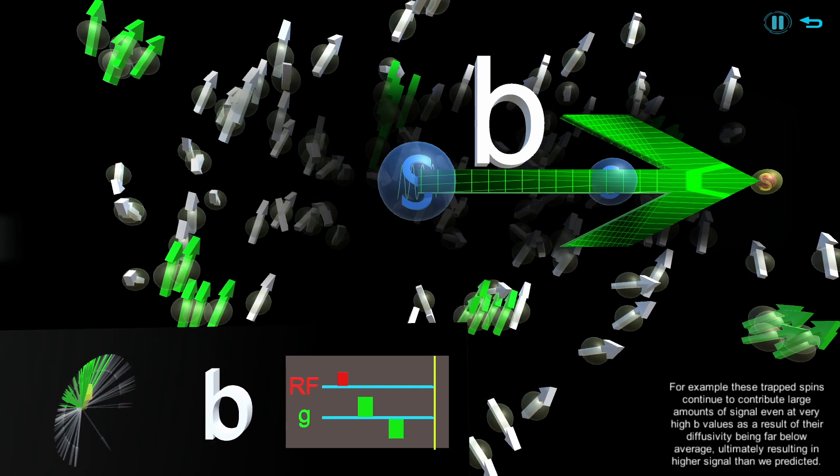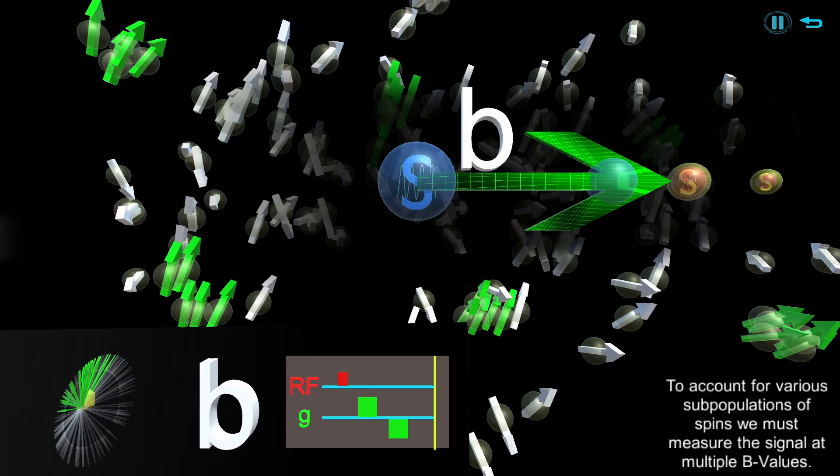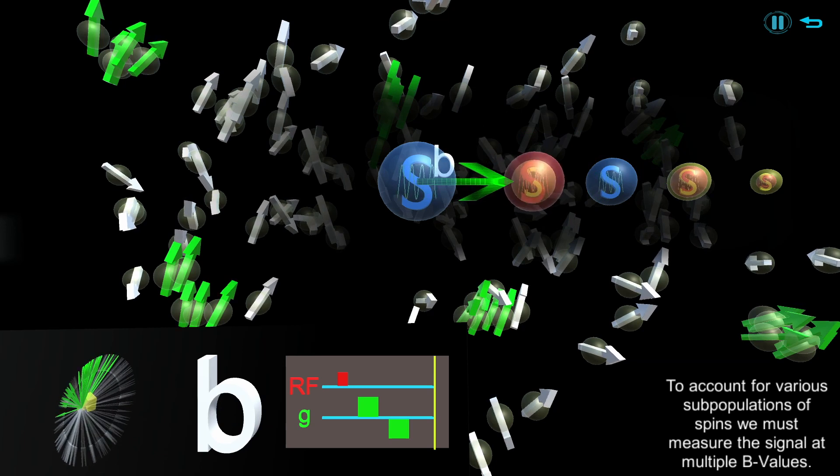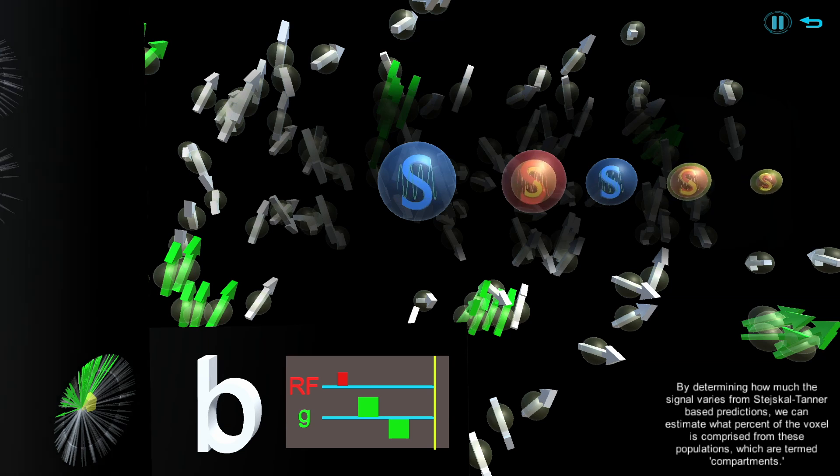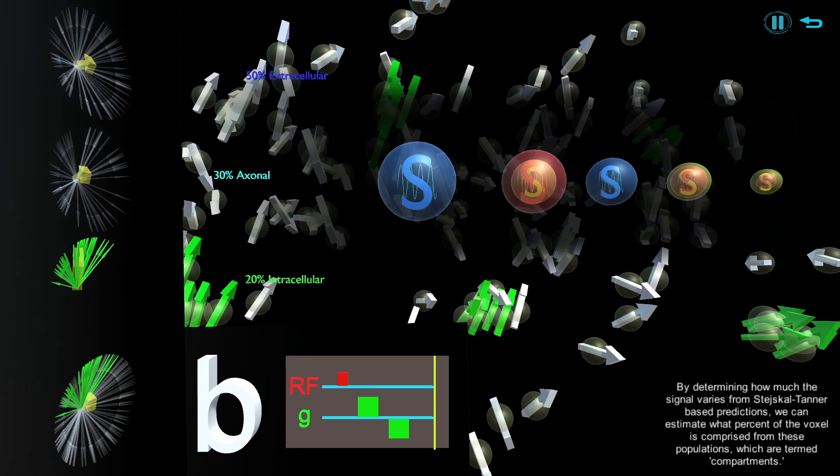To account for subpopulations of spins we must measure the signal at multiple b-values. By determining how much the signal varies from Stejskal-Tanner-based predictions, we can estimate what percent of the voxel is comprised from these populations, which are termed compartments.